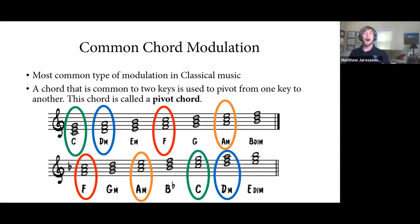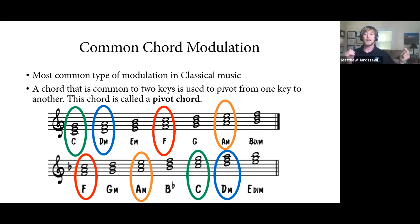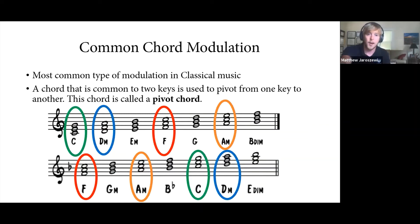Common chord modulation is by far the most common type you'll encounter in classical music. Essentially, you take two keys — your starting key and the key you're modulating to — and look at the chords built on each scale side by side, figuring out which ones are common to both keys.